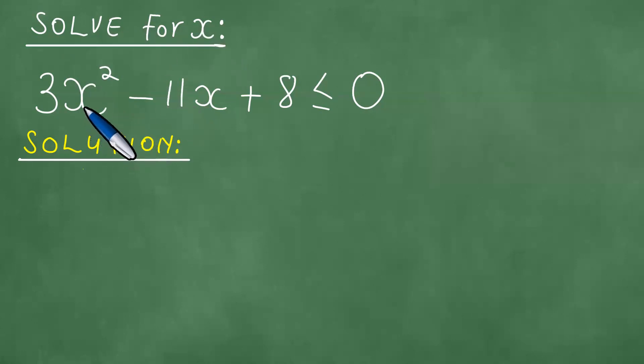We need to solve for x. We are given the quadratic inequality 3x squared minus 11x plus 8 is less than or equal to 0.